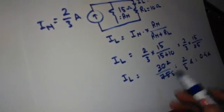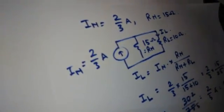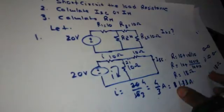So by Norton theorem, we can easily find that for the given circuit — 20 volt supply with multiple resistances — we can simplify it into a Norton model and easily find the load current value of 0.4 ampere. This is all about Norton theorem. Thank you.